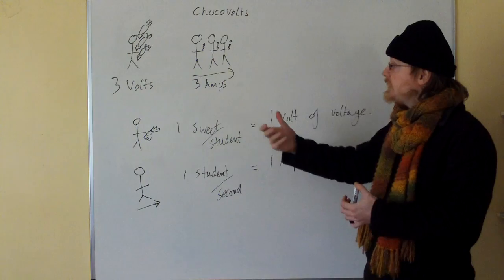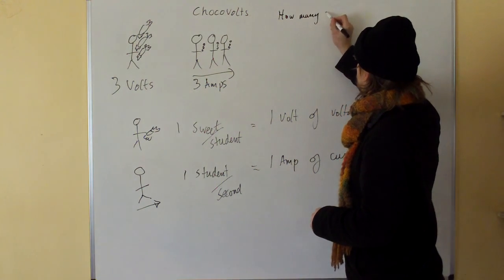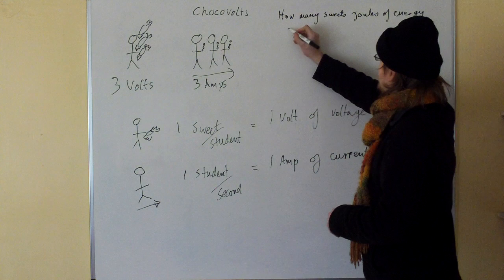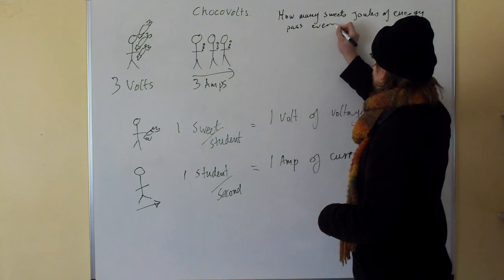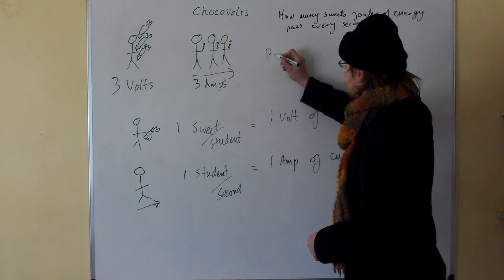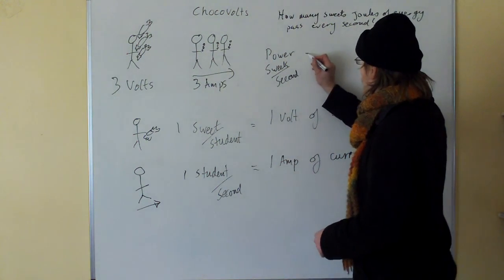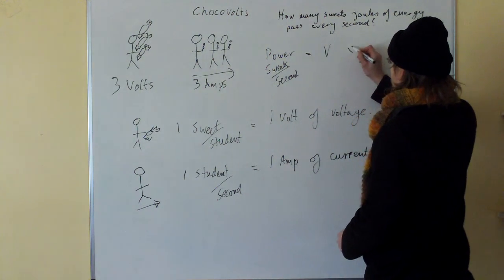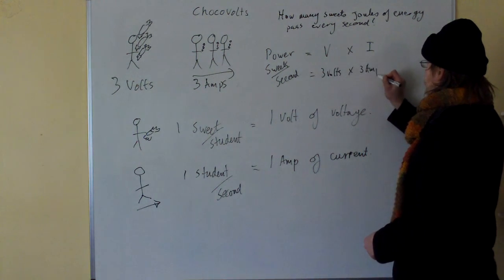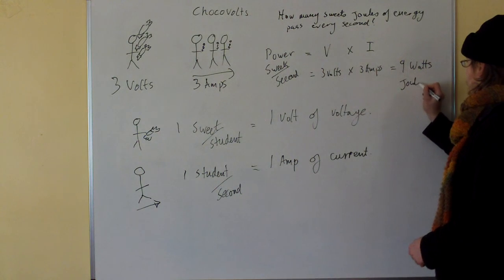What is the power? How many suites — how many joules of energy — are passing every second? The answer is very simple: power in suites per second equals voltage times current. So it's three volts times three amps equals nine watts, which is joules per second.